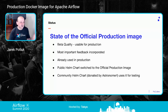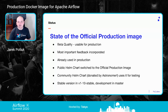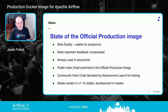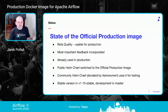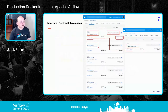Start using it and give feedback — we love hearing what you want to improve. It's already used in production by several people. The public Helm chart, not managed by the community, already switched to use this image a few weeks ago. The community Helm chart donated by Astronomer — thanks especially to Daniel Imberman and Greg from Astronomer — uses it for testing. The Helm chart is in master but not yet officially released. The stable version is in the v1.10 stable branch, and the development version is in master.